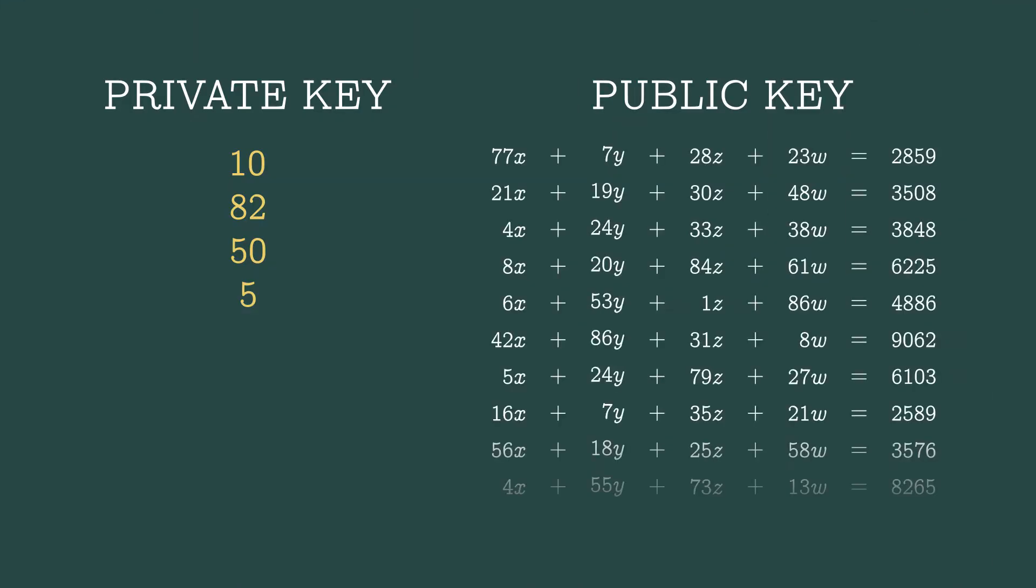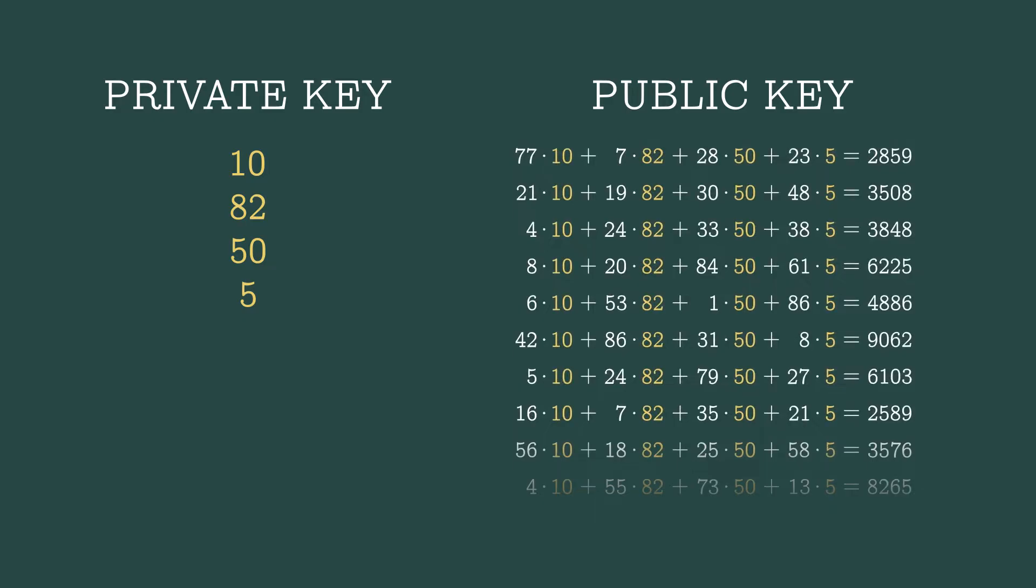When we plug in the secret numbers, letting x equal 10, y equal 82, z equal 50, and w equal 5, the equations are all true. In other words, the secret vector is a solution to each of these equations.